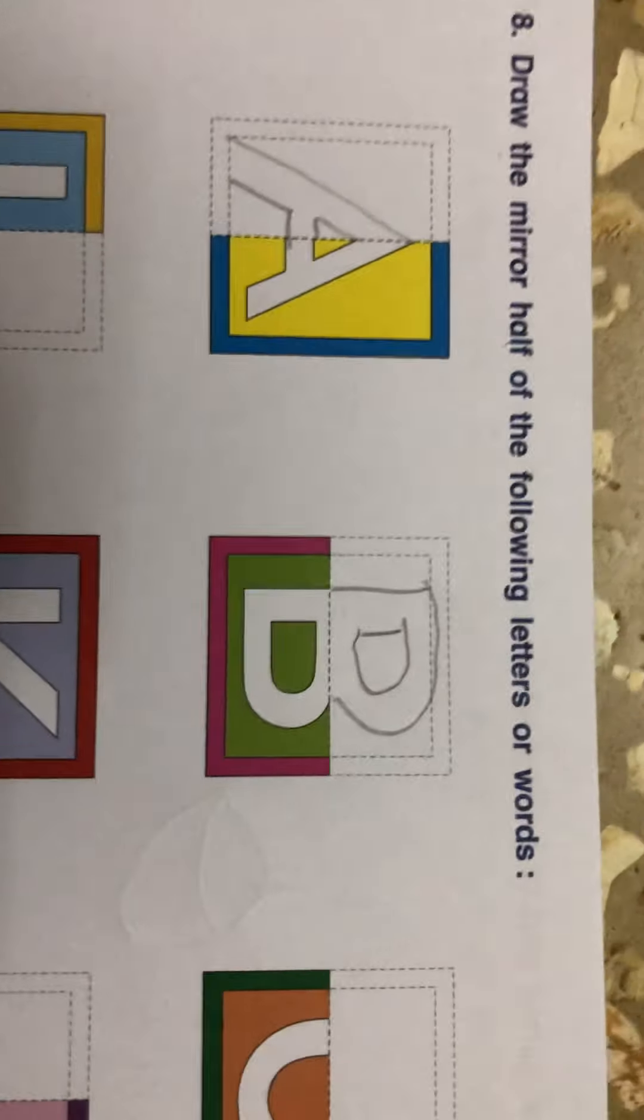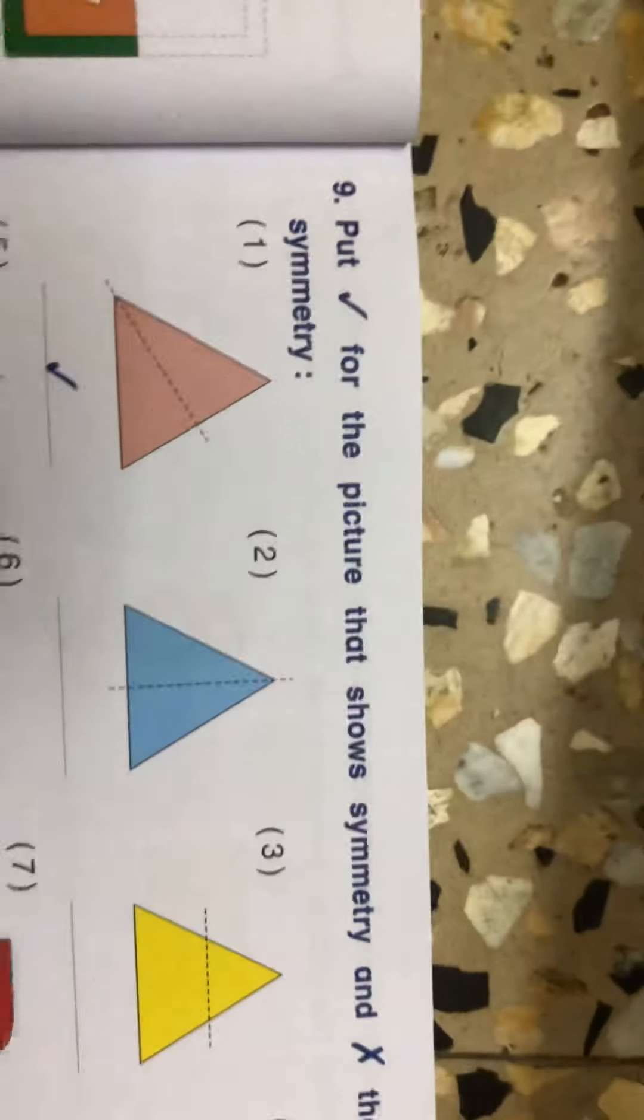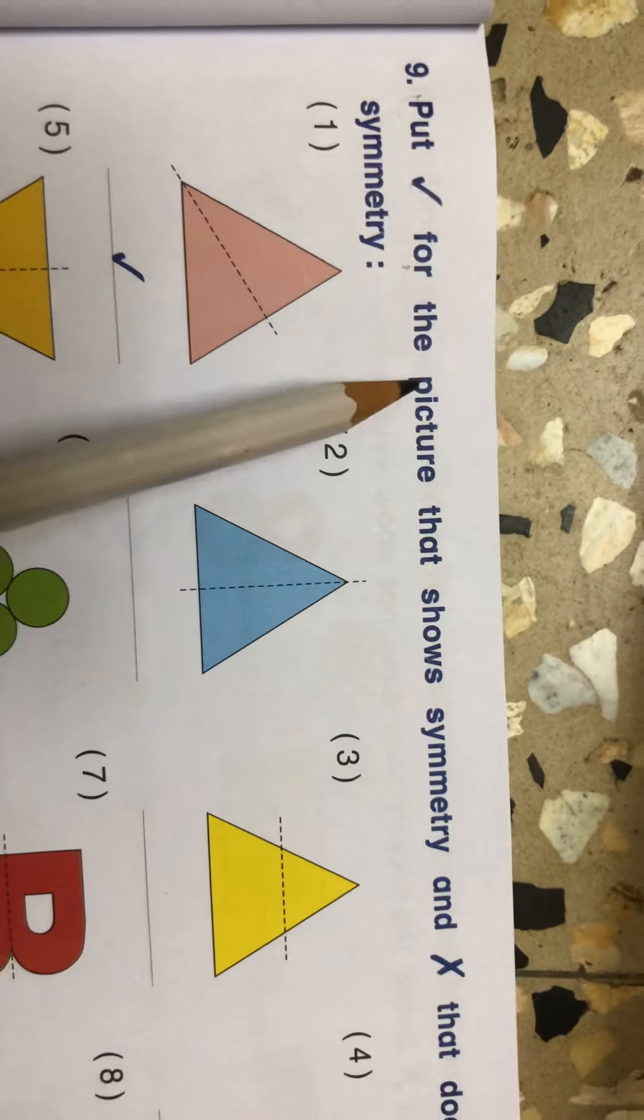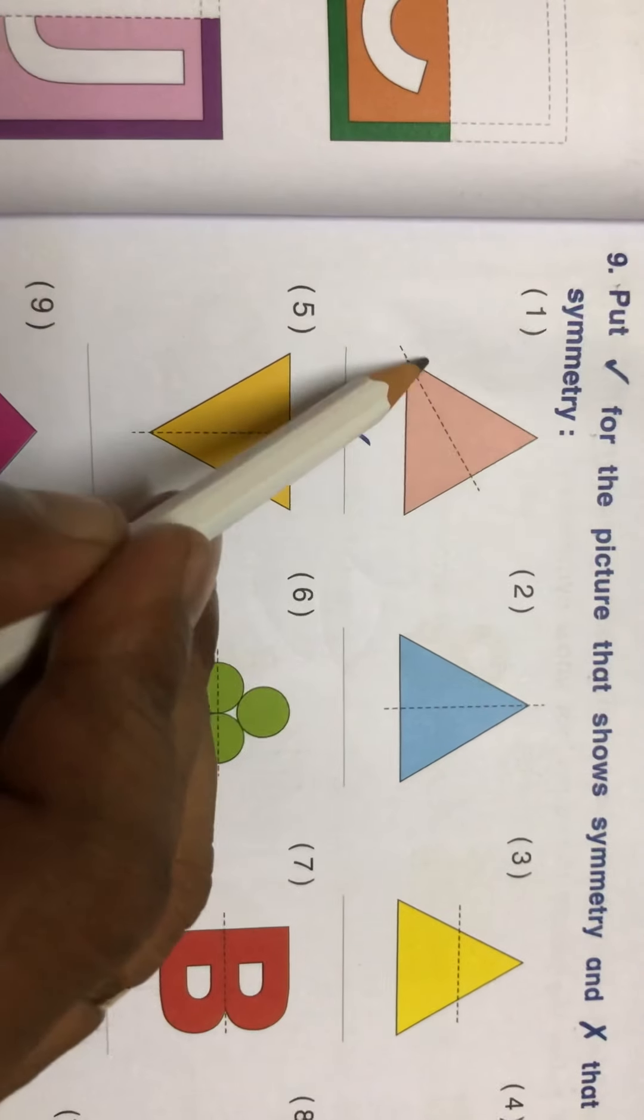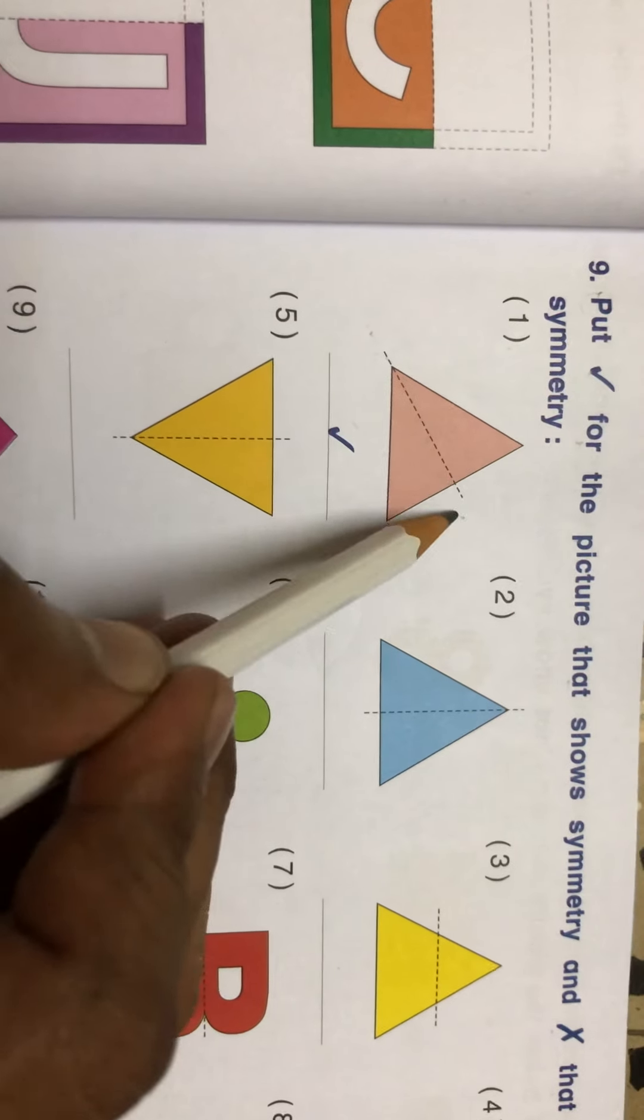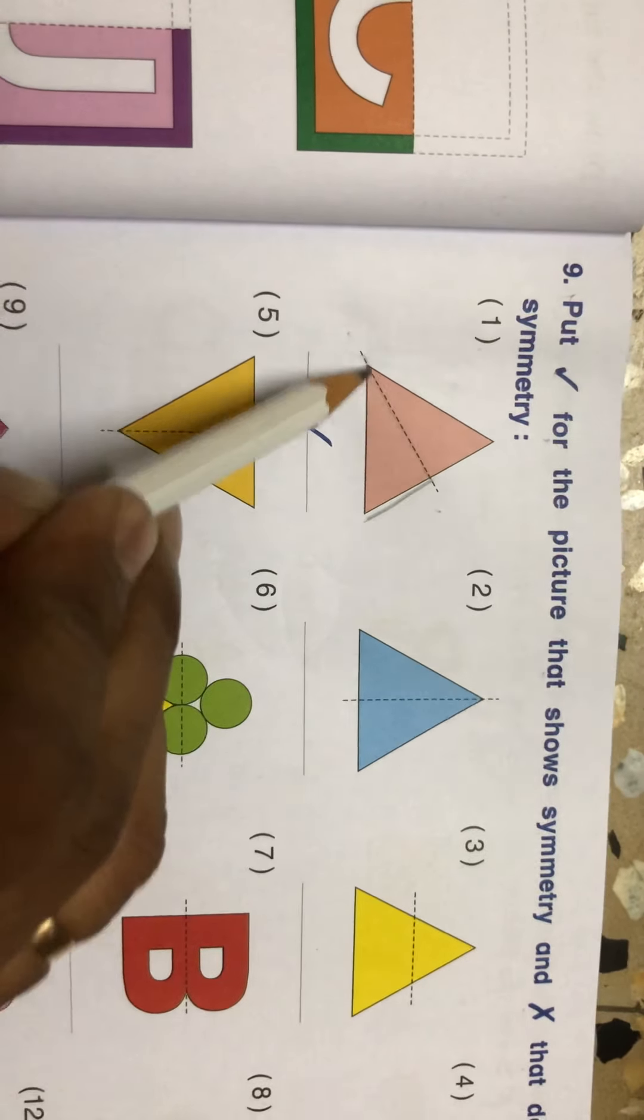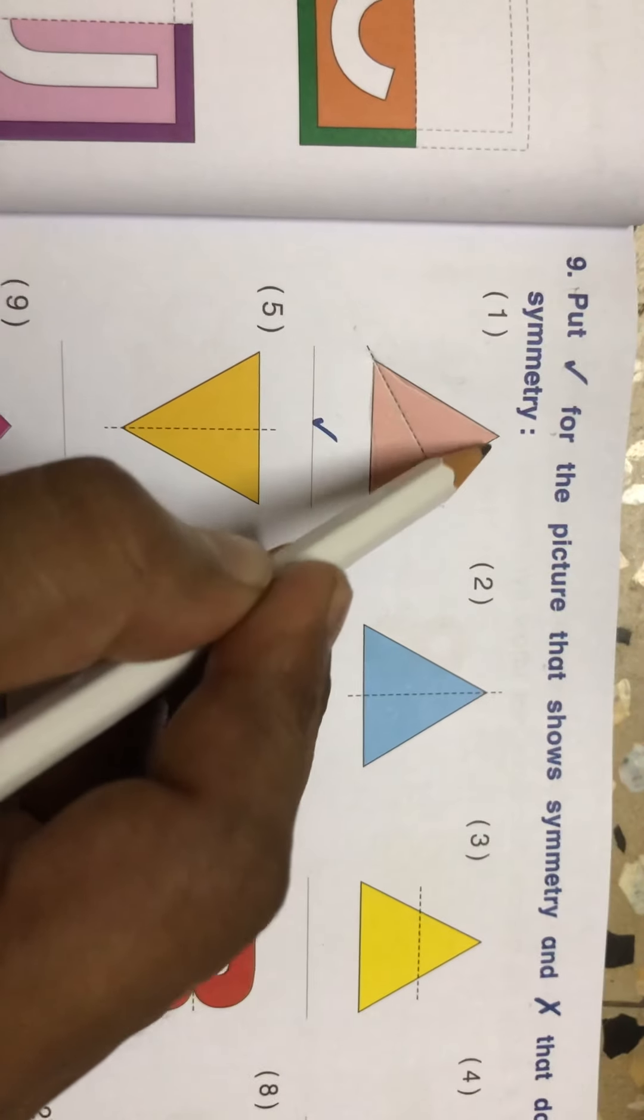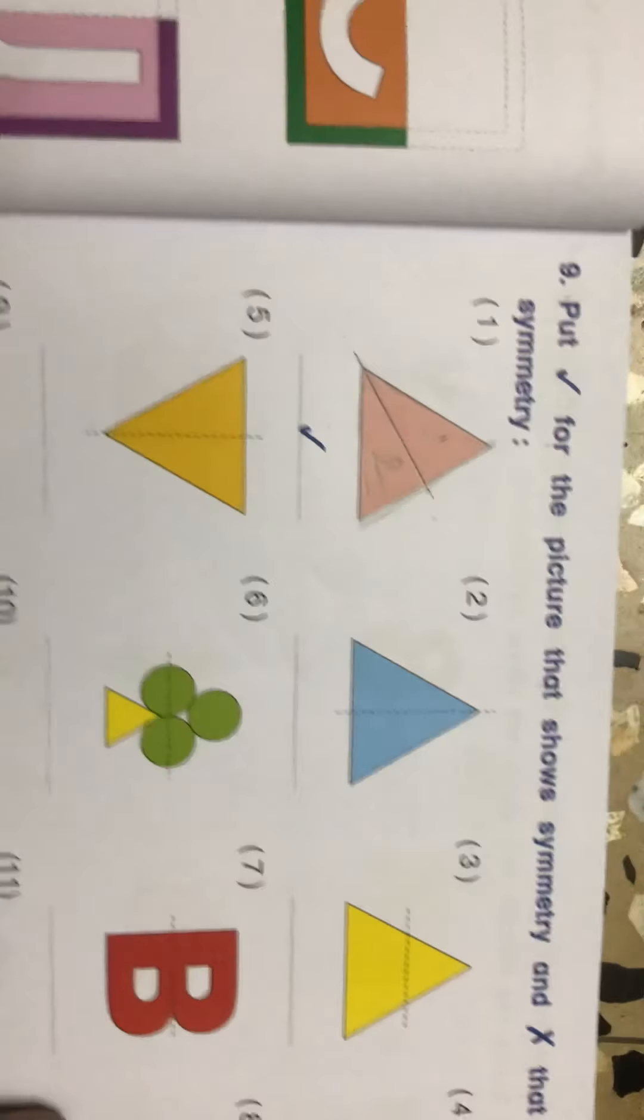Now see the next page, page number 13. Read the question: Put tick mark for the picture that shows symmetry and cross that does not show the symmetry. Now see, it is a triangle. This line is a line of symmetry. This line has divided this triangle in two equal parts. One part and another is here. So it has divided in two equal parts. See, one and two. So it is a symmetrical shape.